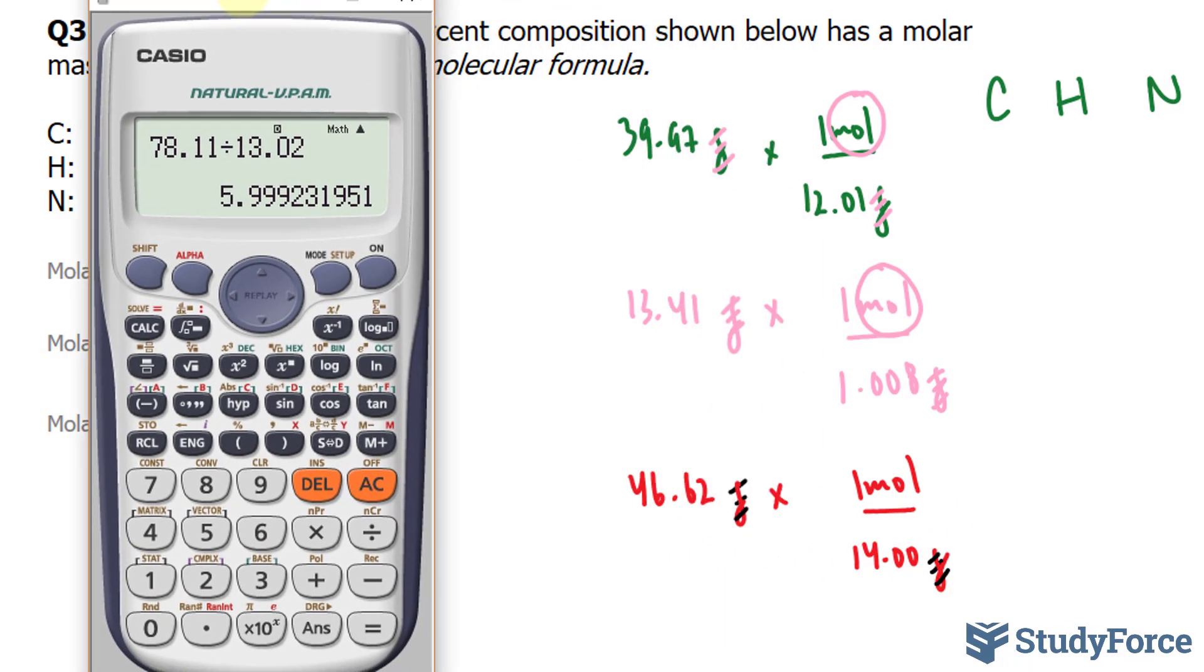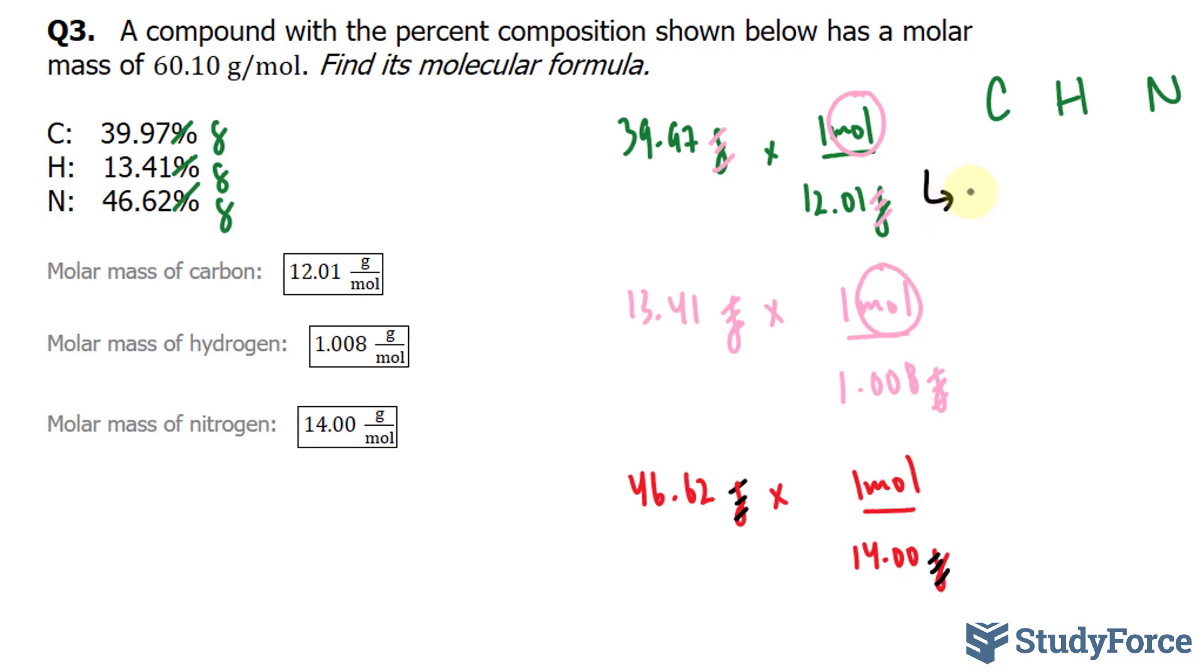I'll start with 39.97, divide that by 12.01, and I end up with 3.32. Now, I want to leave it to four significant figures because this number is four significant figures. So I'll write down 3.328, 3.328, and that actually will go over here eventually. Next,